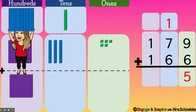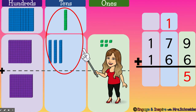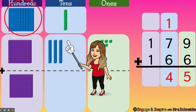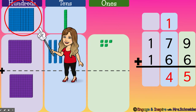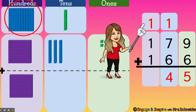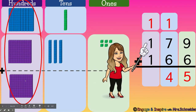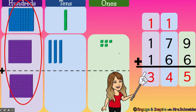How many tens do I have left now? I have four tens left. But one plus seven plus six is not four tens — it was 14 tens. So we can't forget that we carried this 100 over here, so we're going to write 100 — we carried 100 to the hundreds place. Now we're going to add up our hundreds: one plus one plus one equals three hundreds. So 179 plus 166 equals 345.